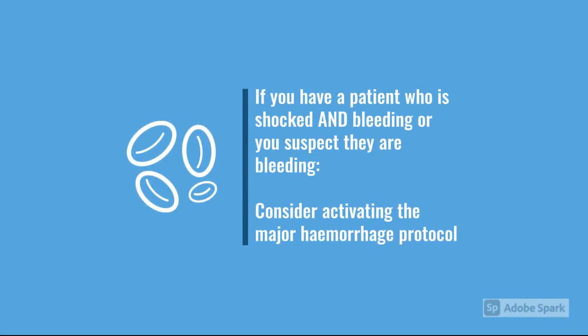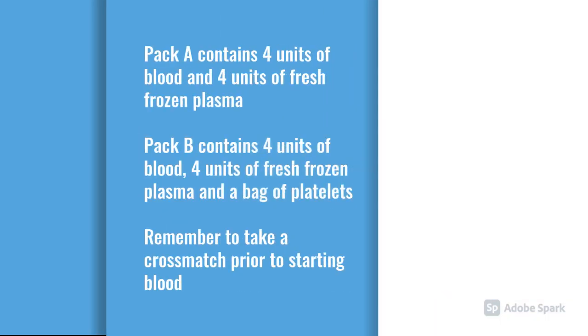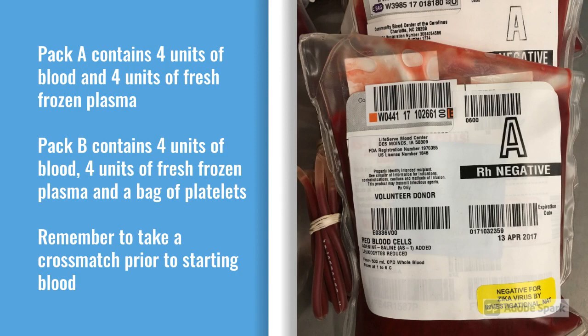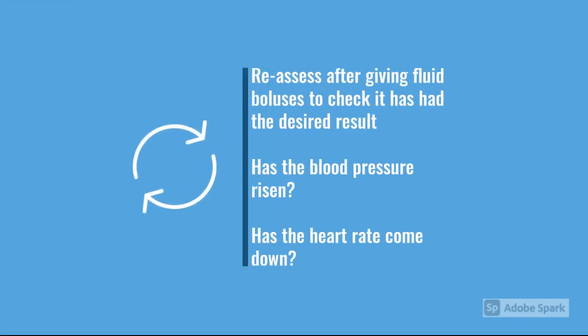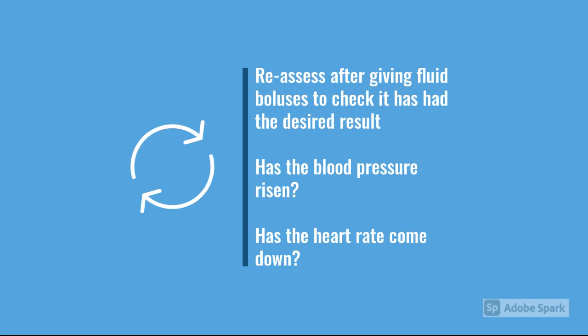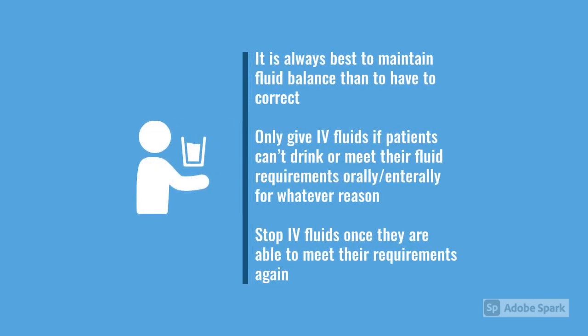If they've bled and have a major haemorrhage, consider activating the major haemorrhage protocol. Pack A has four units of blood — normally O-negative — and four units of FFP (fresh frozen plasma), which has clotting factors. If there's ongoing bleeding despite the first pack, you get four more units of blood, four more of FFP, and one unit of platelets. Ideally take a cross-match before starting a transfusion. Always reassess after treating — it's always better to maintain fluid balance than to have to correct it, and oral and enteral fluids are always better than IV.